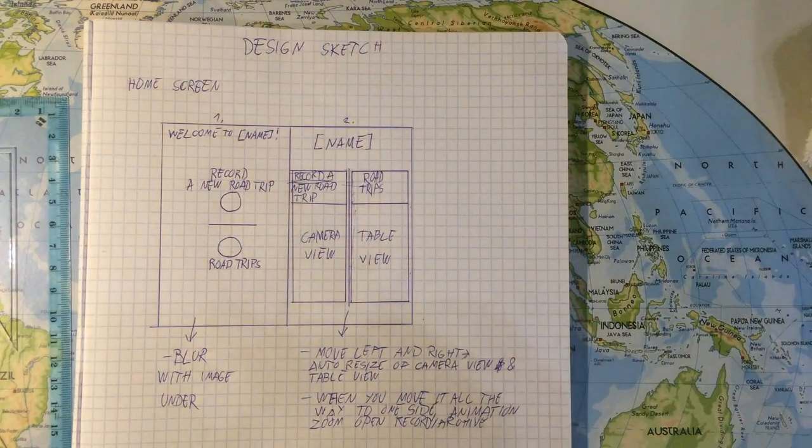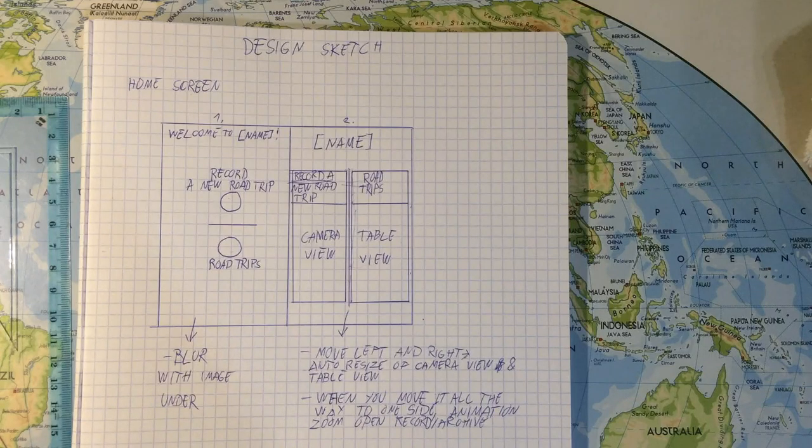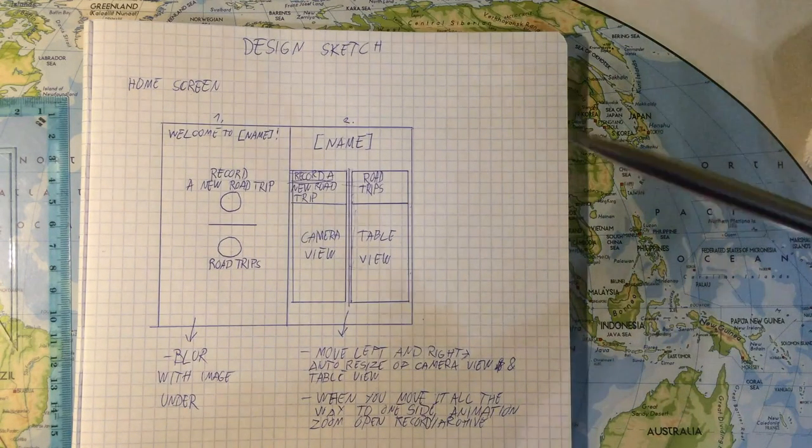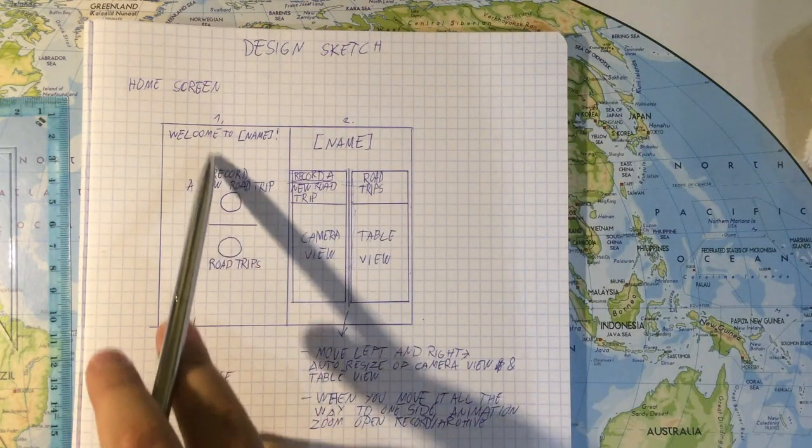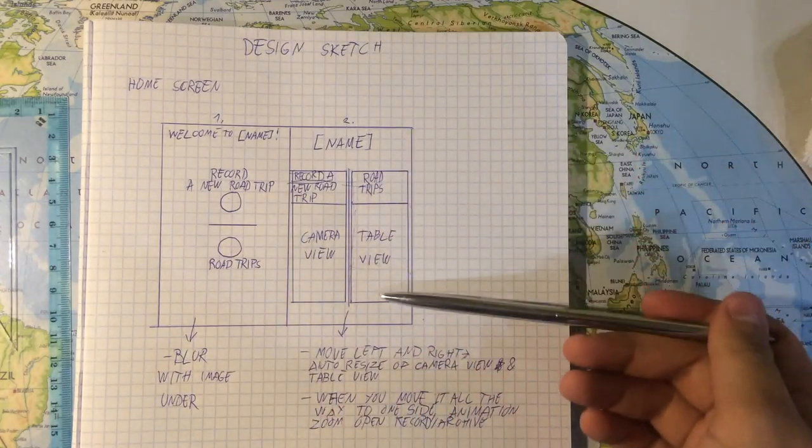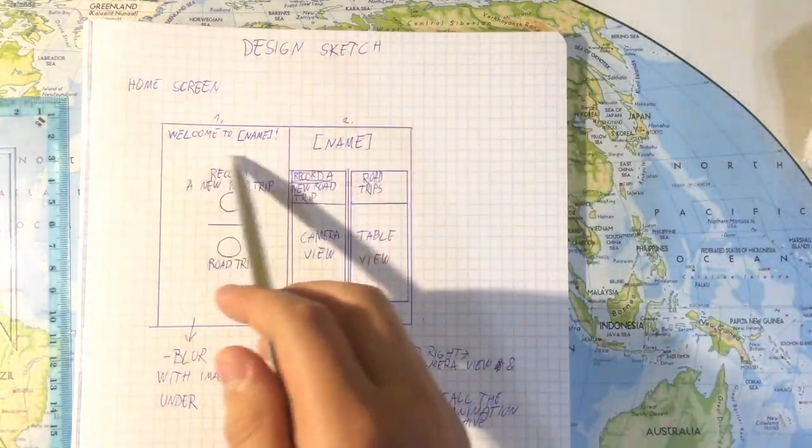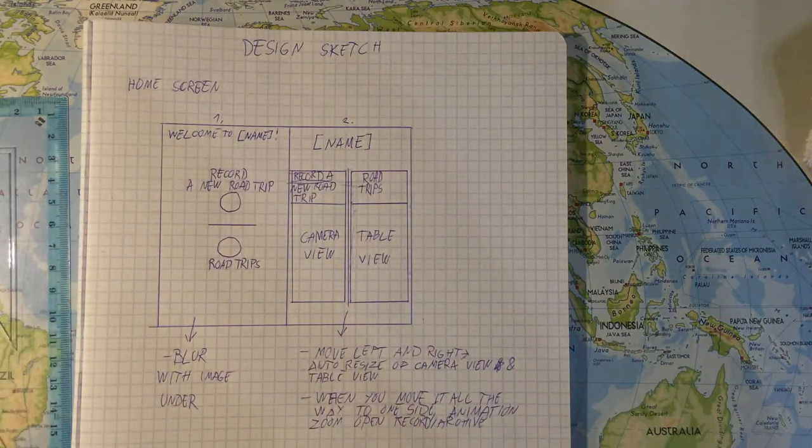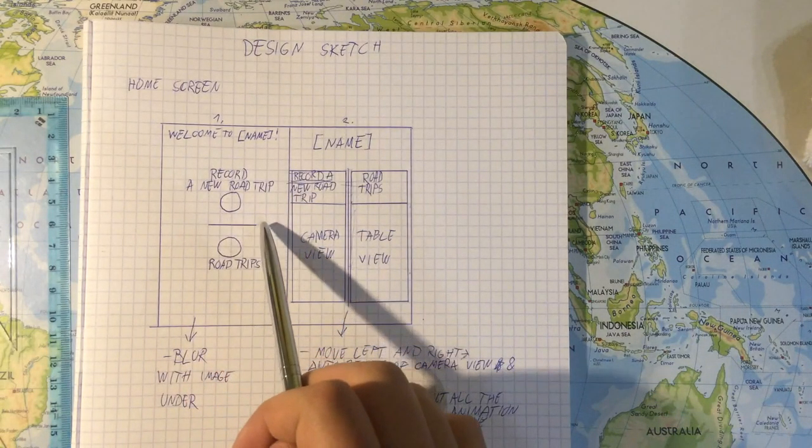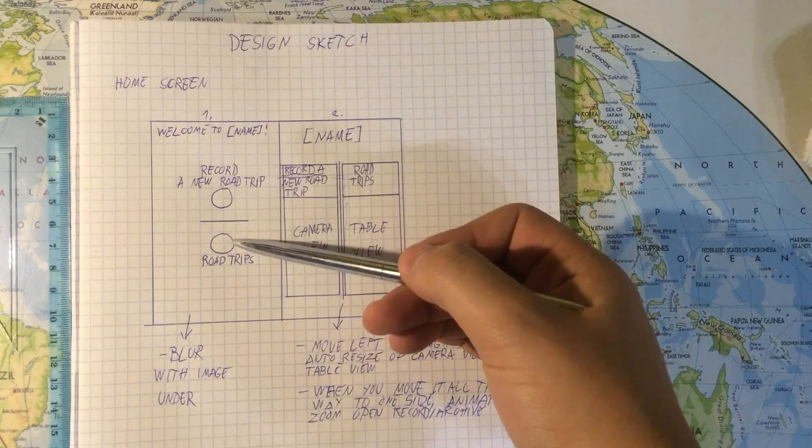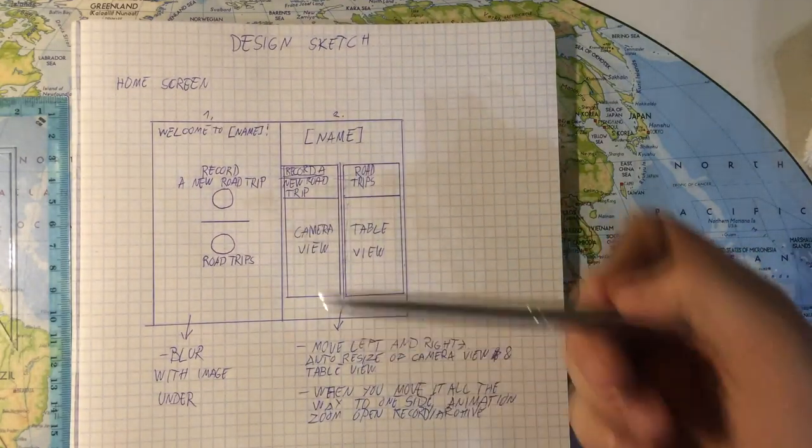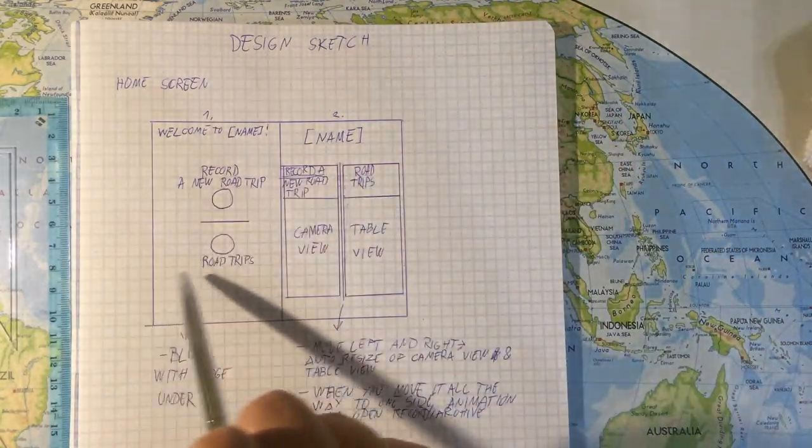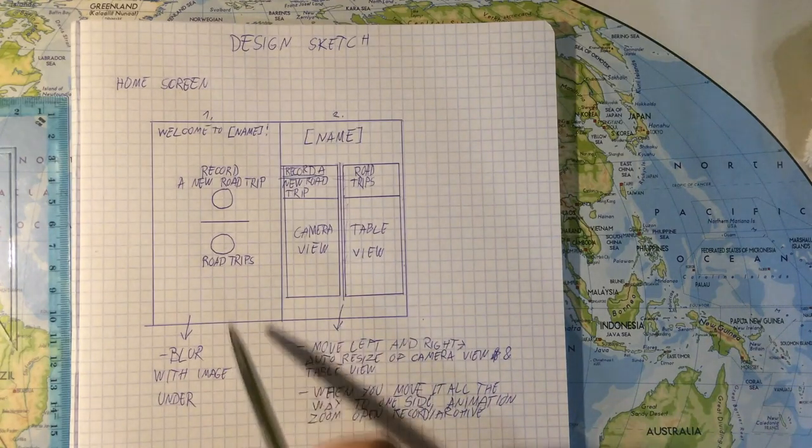Okay, so let me explain these sketches to you. For the home screen, I have the first and second designs. The first one will say 'Welcome to Road Trip Scrapbook' and we'll have a separator. These circles are actually going to be icons for recording your road trip and viewing past road trips.